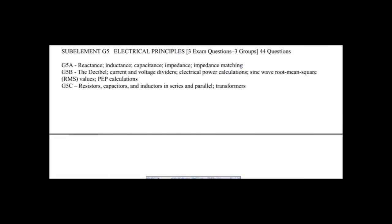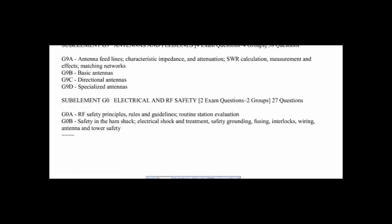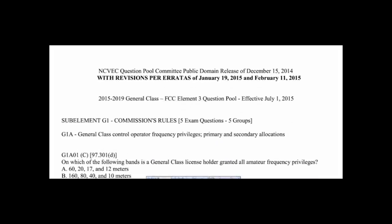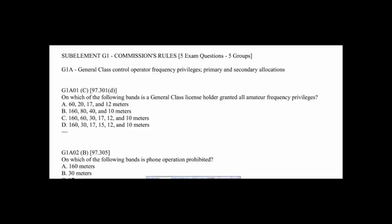Question G1A01: On which of the following bands is a general class license holder granted all amateur frequency privileges? We can eliminate some of the answers. A — 20 meters is divided into different portions for extra and general class, so that eliminates A. B can also be eliminated because 40 meters is also divided. D — 15 meters is also divided. This shows how we can eliminate the wrong answers. The correct answer is C.